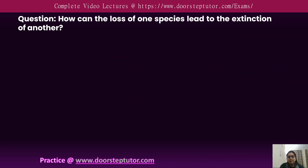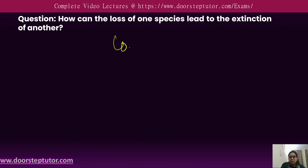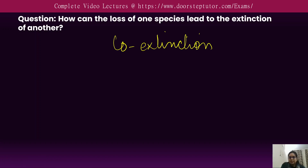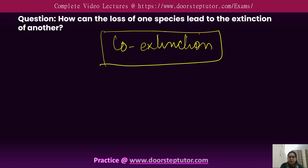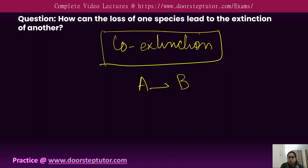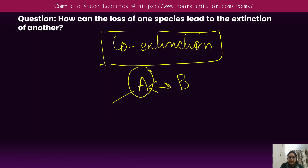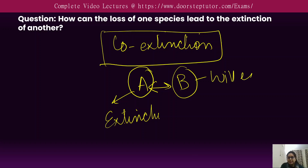The loss of one species can lead to the extinction of another through a phenomenon known as co-extinction. When two mutually interrelated species exist, if one becomes extinct it is natural that the second species will also become extinct in the near future.